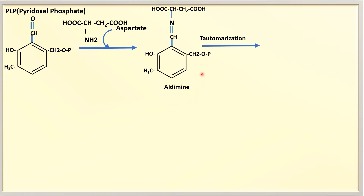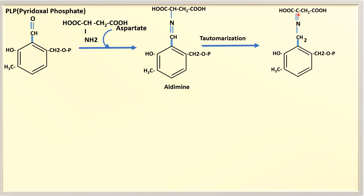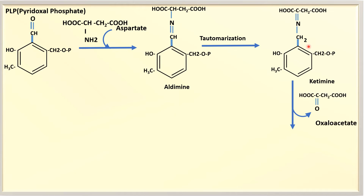This aldimine undergoes tautomerization, where a hydrogen is transferred from the carbon of aspartate to the carbon that was previously part of the aldehyde group. As a result, the aldimine is converted into a ketimine. This ketimine then undergoes the next reaction, resulting in release of oxaloacetate.